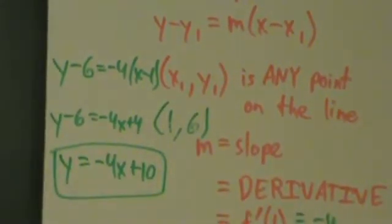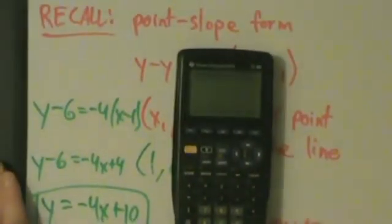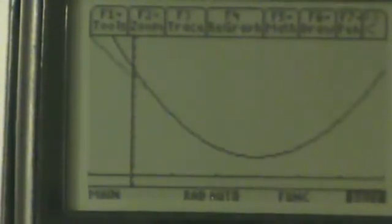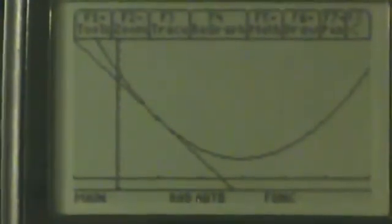Let's verify that with a graphing calculator — here we have a TI-89. In the equation editor, the first equation is x squared minus 6x plus 11, our original function, and the second is negative 4x plus 10, the tangent line we found. Looking at the graph, we can see the tangent line touching the curve at x equals 1, which verifies that we have the correct line.